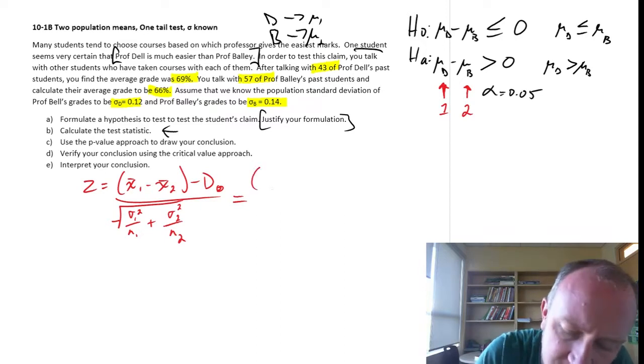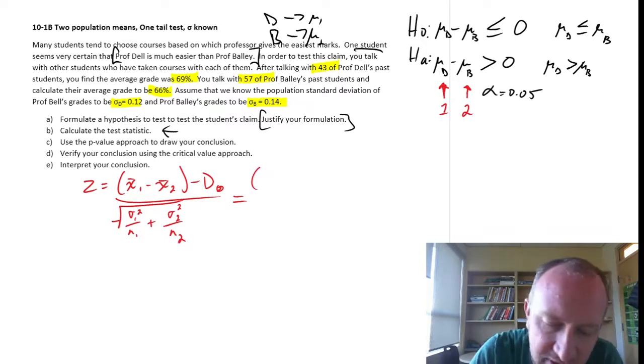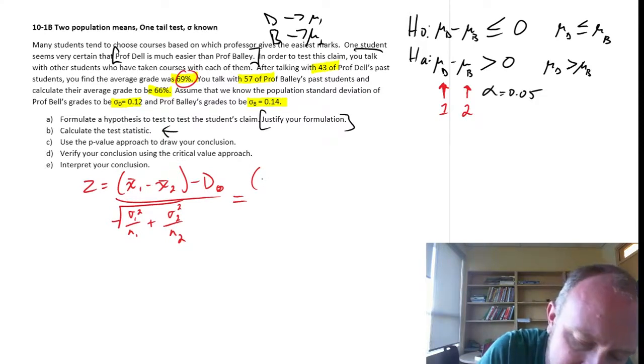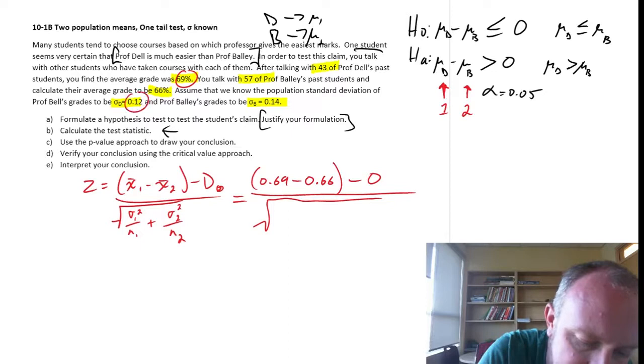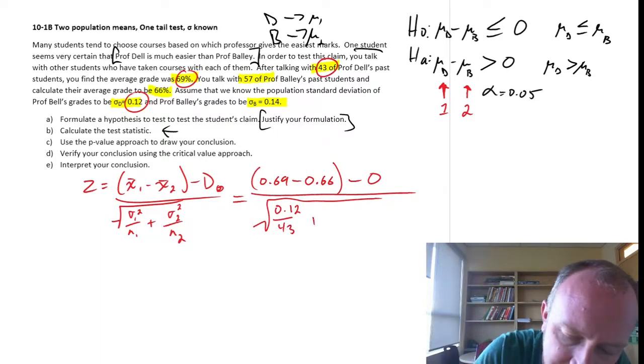I guess the one advantage to using numbers instead of letters here is that the formula is always going to be x1 and x2. So you have to make sure even if you've used letters up here, d and b, this is 1 and this is 2 when you enter that into your formulas. Here I'm going to have the sample mean for Professor Dell is 69%. I'm going to put these into decimals, a little bit easier to work with. 0.66, our hypothesized value is 0, so I'll add that in just for completeness.